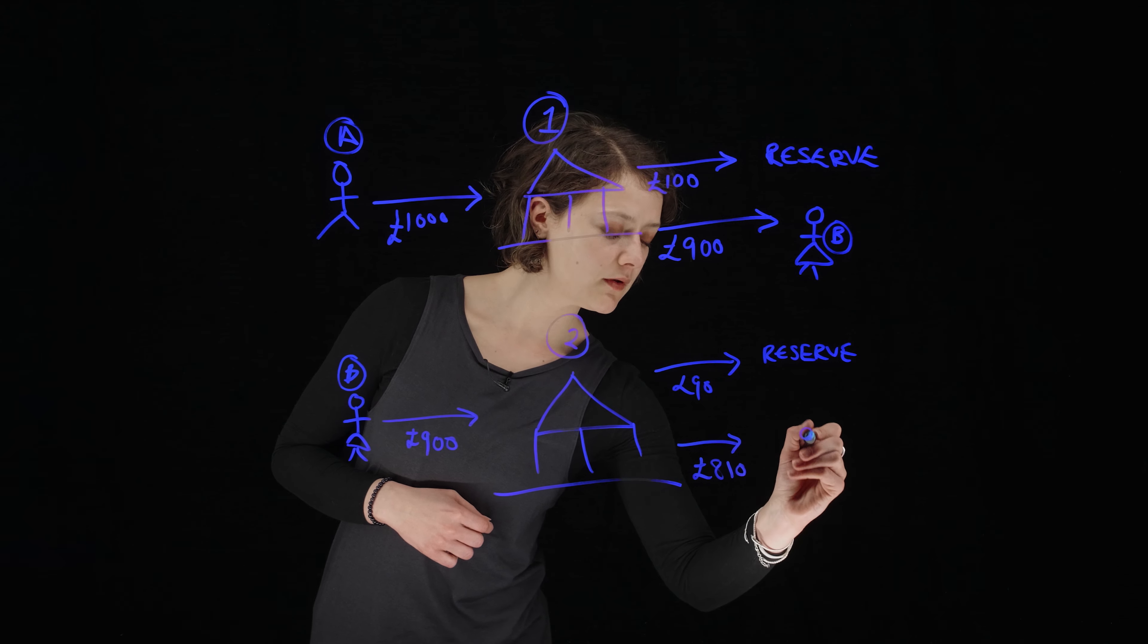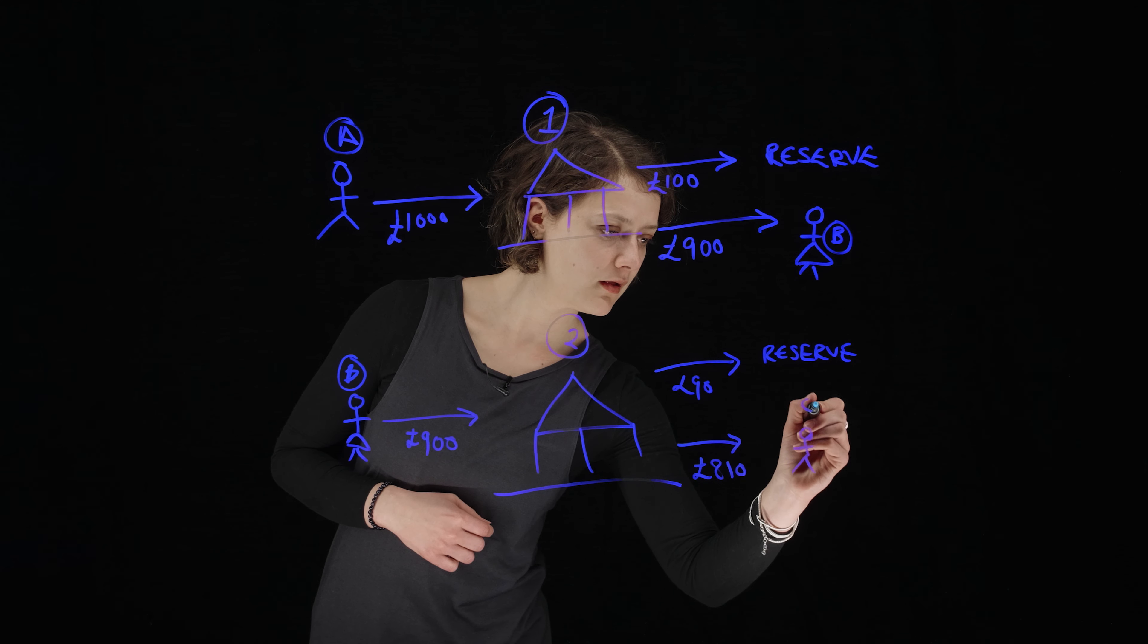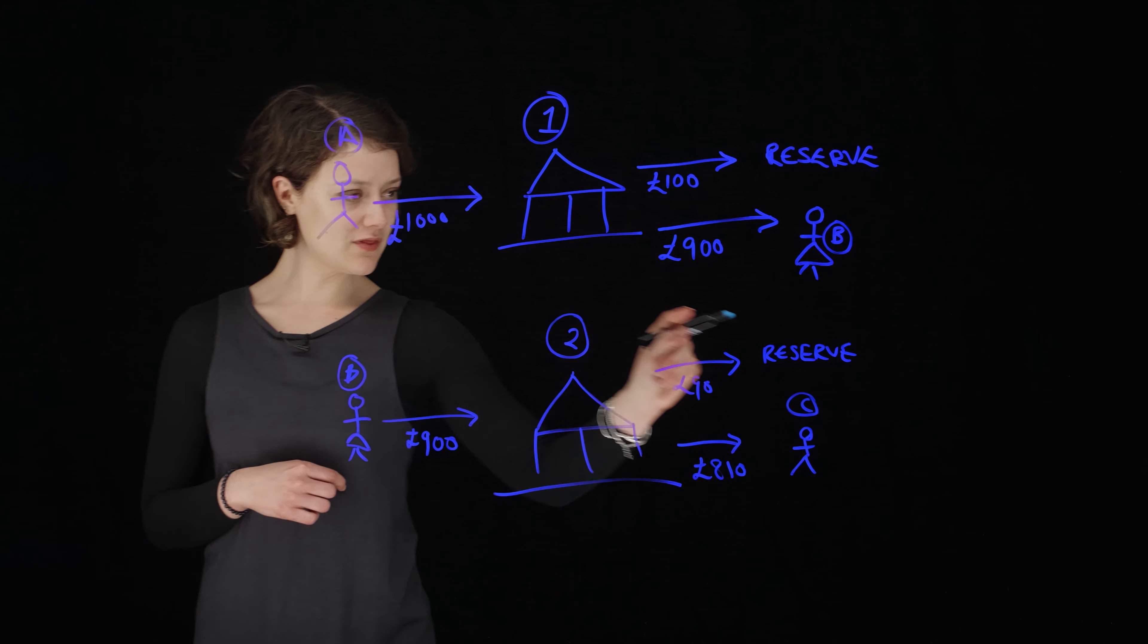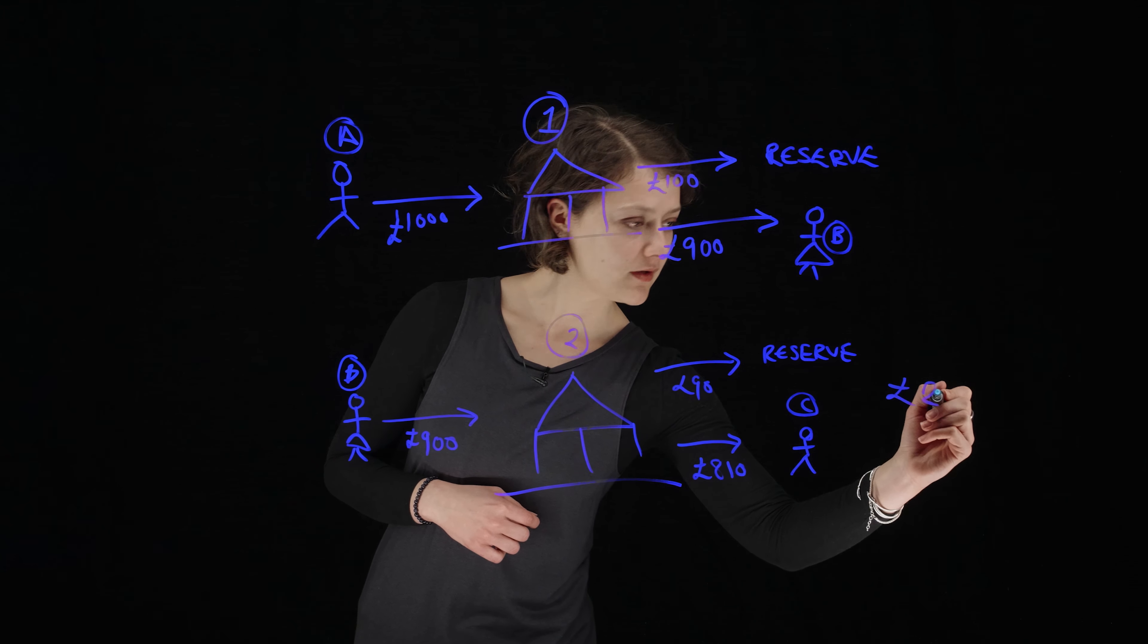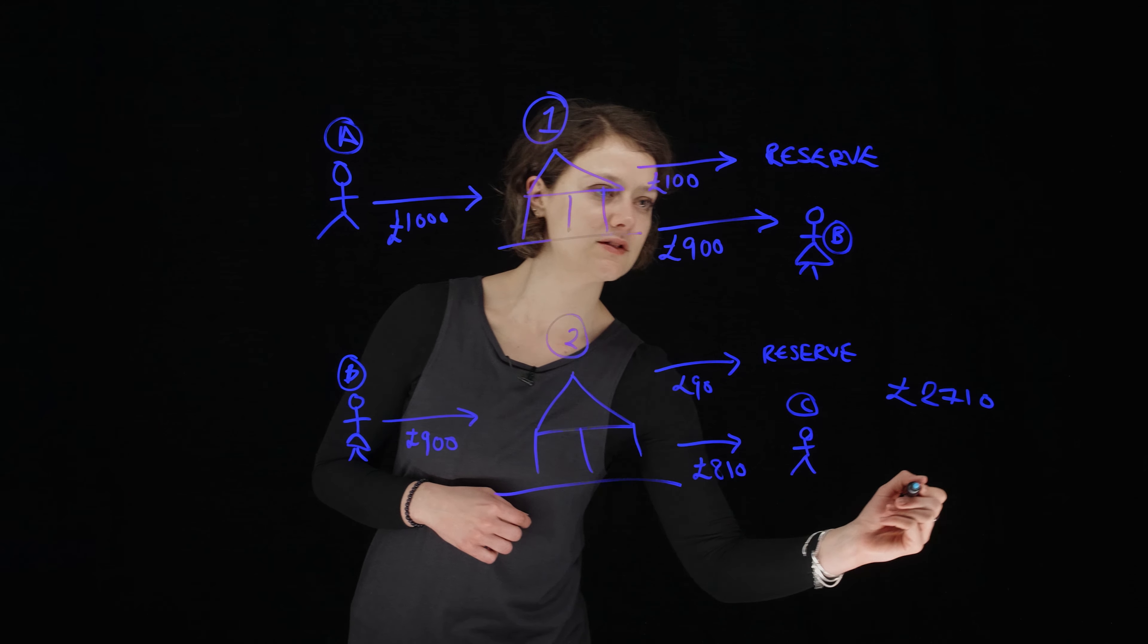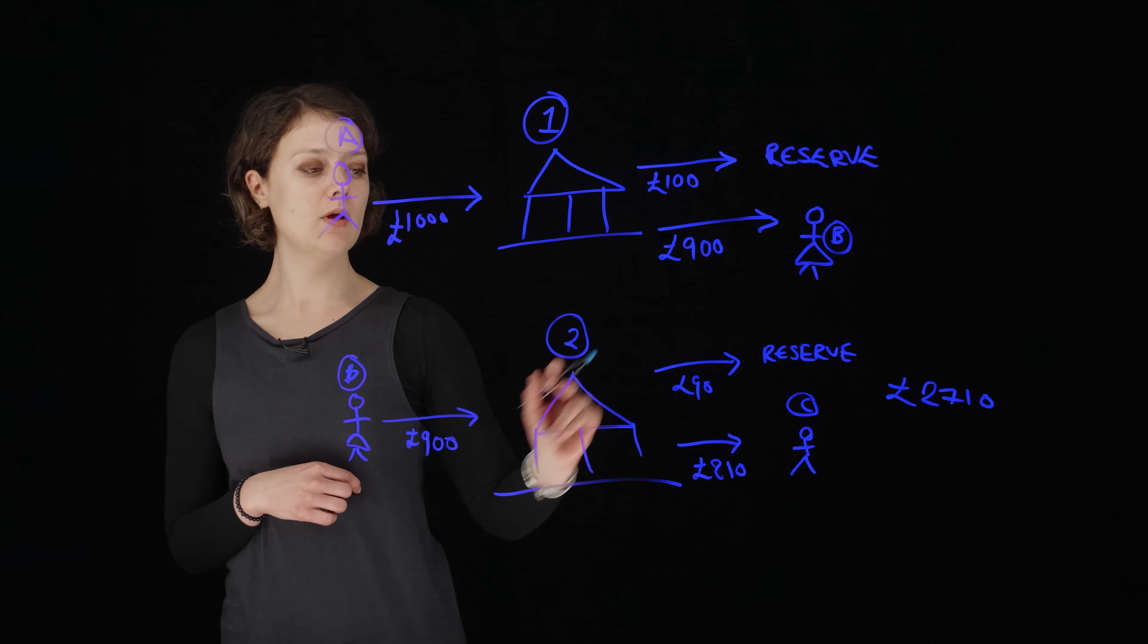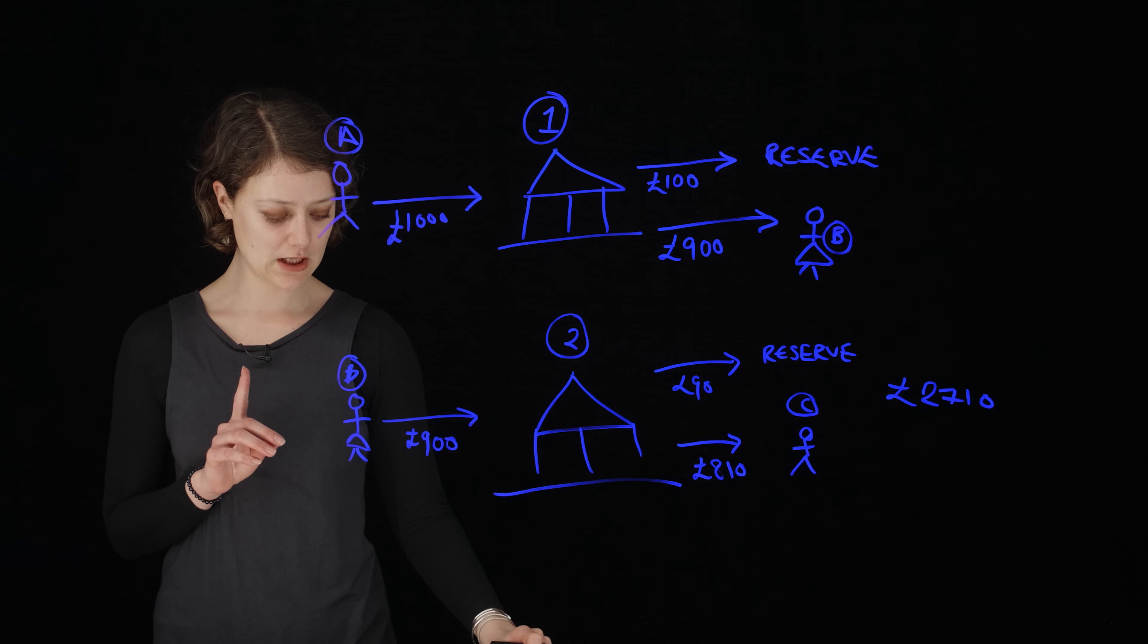And this is important because what you have here is the movement of money. So whilst we started off with a thousand pounds, by this point you've actually got 2,710 pounds in the system. So we're actually making money at this point, but that's making money for the system. The banks themselves aren't making any money yet.